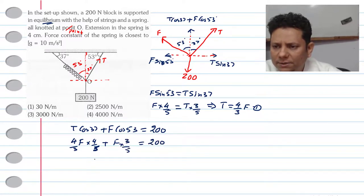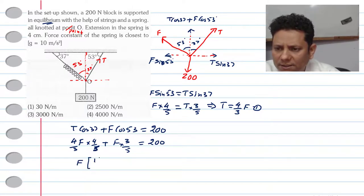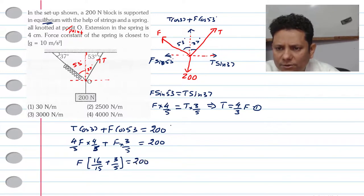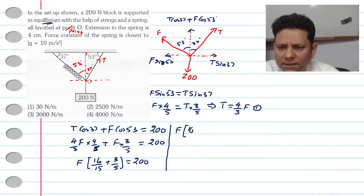This should be equal to 200. Taking F as common, the expression inside becomes 16/15 plus 3/5. Taking LCM as 15, this becomes (16 + 9)/15, so F multiplied by 25/15 is equal to 200.